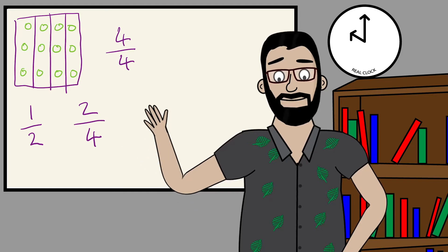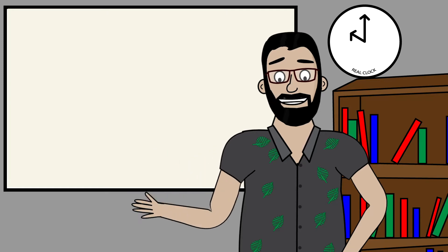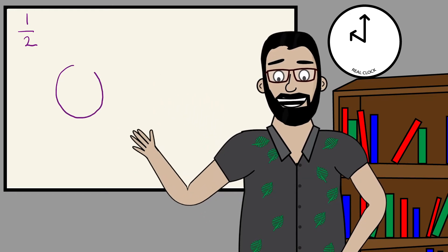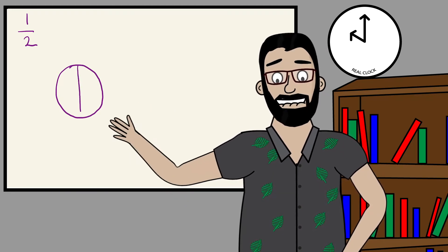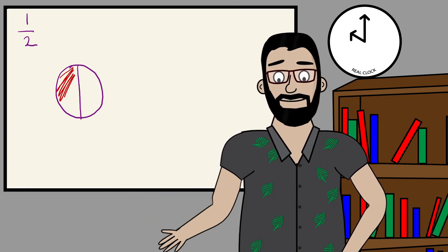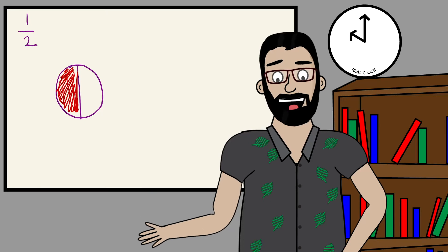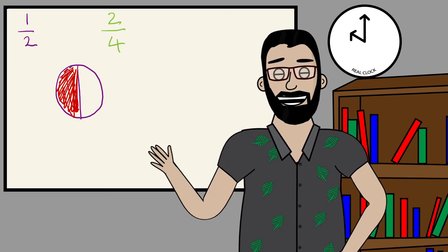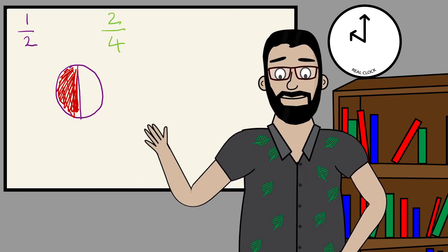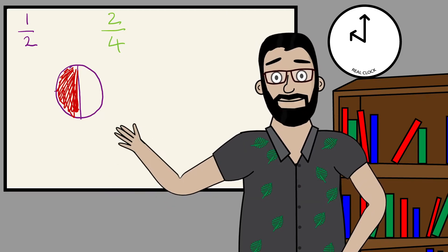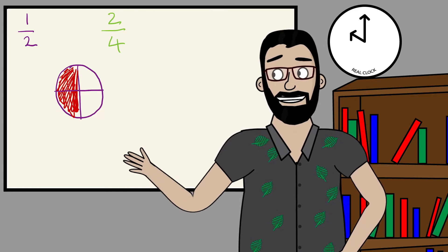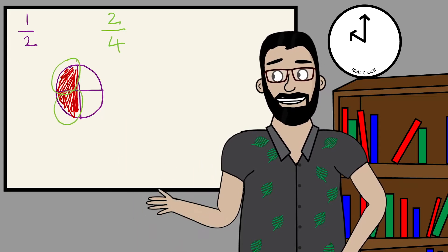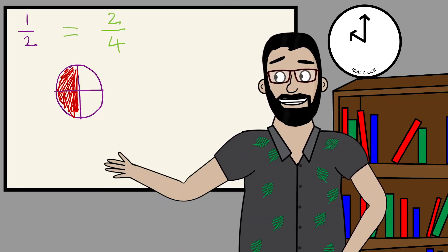Now if we have some fractions, like one half, that is actually exactly the same as two quarters. So let me show you what I mean. If I have one half of this object — I'll use my wonky circle again — if I split that into half and colour in half, then that is one half of a circle. If I wanted two quarters, then I need to split my circle into four equal parts, and I've already got it in two equal parts. If I just draw another line along here, it is now officially in four equal parts, and we notice that two of those equal parts are actually coloured in. So one half is exactly the same as two quarters.